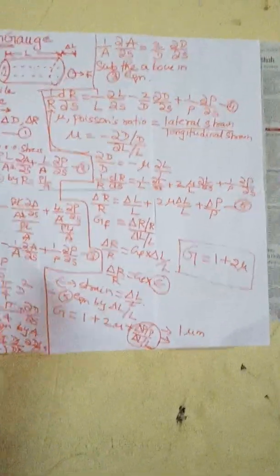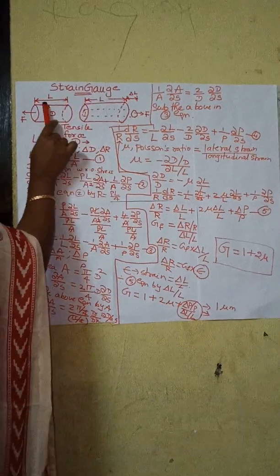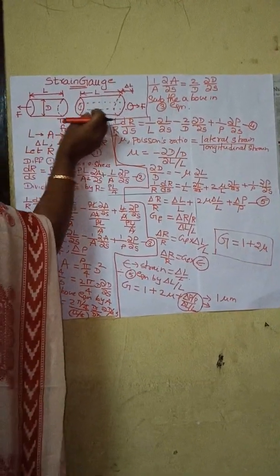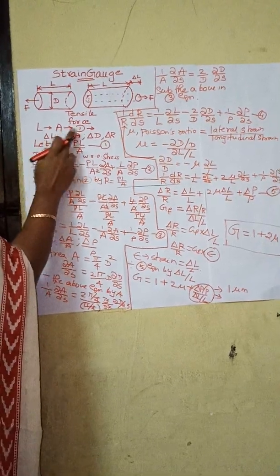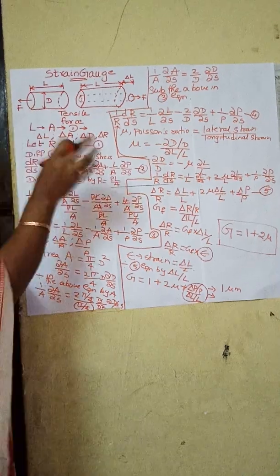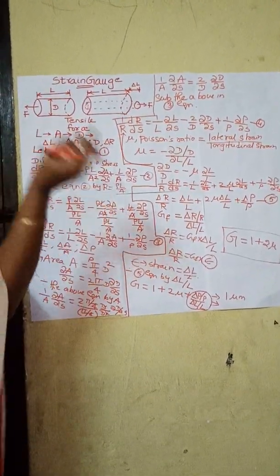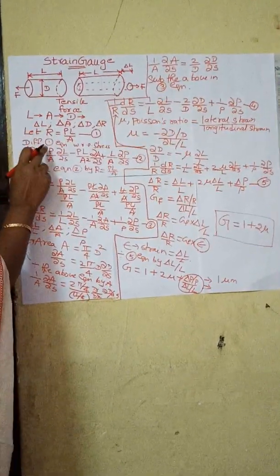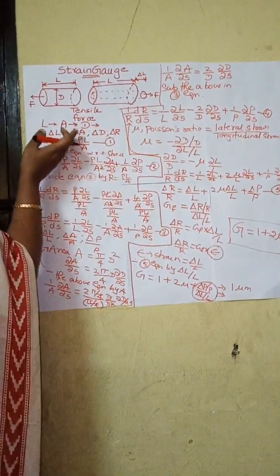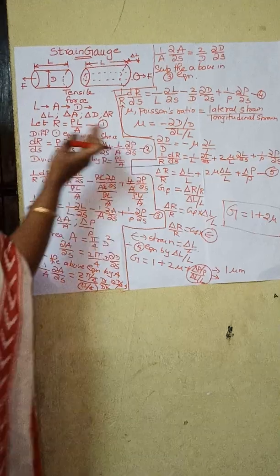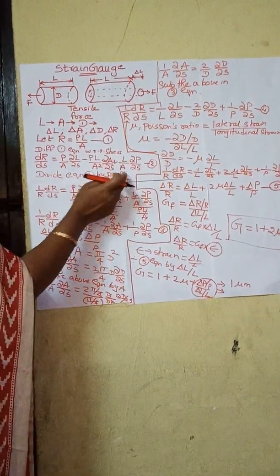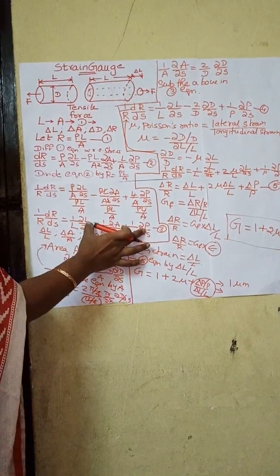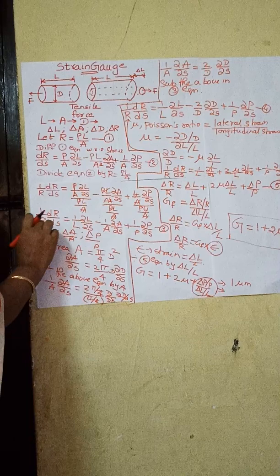Once again, let me recollect everything. The diagram shows length L, diameter D, and changes upon applying force. Let L be the length, A be the area, D be the diameter, with changes ΔL, ΔA, ΔD, and ΔR. The resistance of the unstrained gauge is R = ρL/A — first equation. Differentiate with respect to stress to get the second equation. Then divide the second equation by R = ρL/A to obtain the third equation.